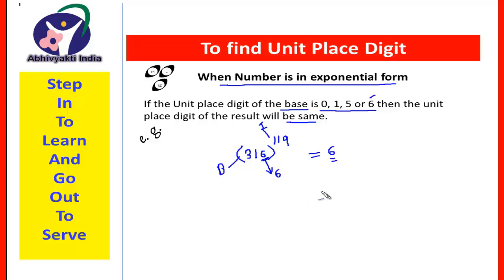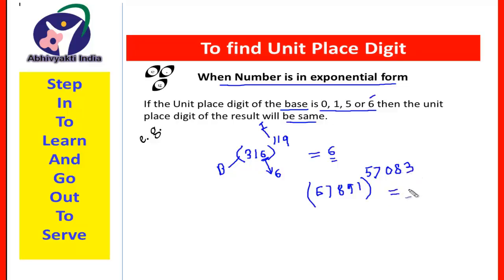See one more question: 6,789,1 to the power 57,083. Now, it seems very, very difficult. But the unit place digit of the base is 1, and since the unit place digit of the base is 1, the unit place digit of the result will also be 1. So in this case, the answer will be 1.